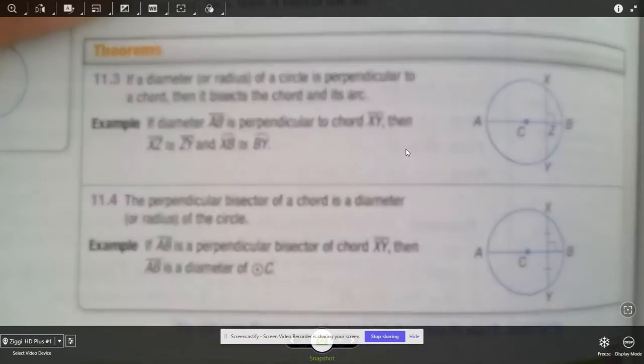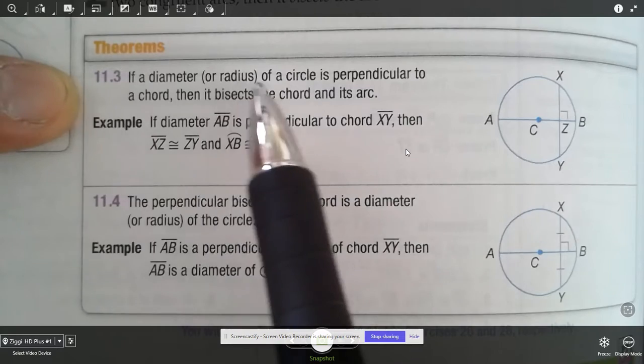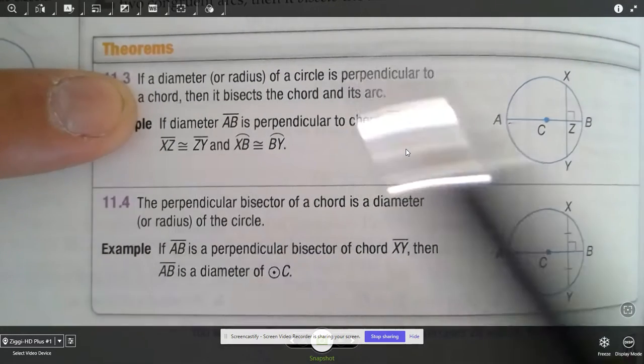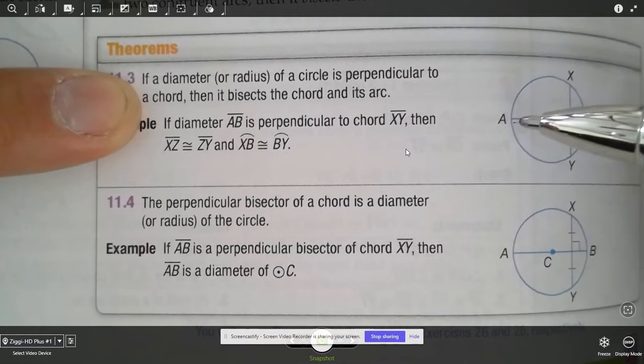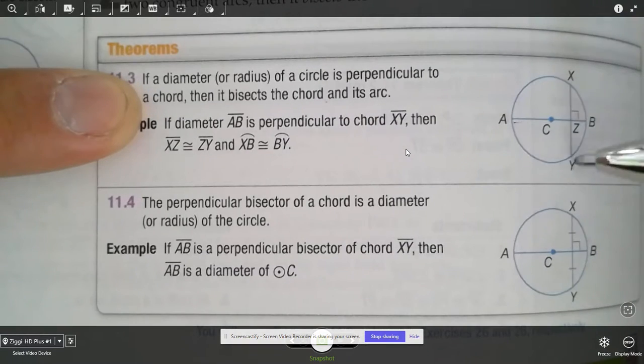So let's go through this theorem. This one is pretty simple. So if a diameter, here's the diameter, if it's perpendicular to the chord, so let's do a chord that is perpendicular, meaning this is a chord XY. It goes straight through, and it's perpendicular to the diameter. Guess what? It's saying that it bisects the chord. That means XZ is going to be congruent to ZY.